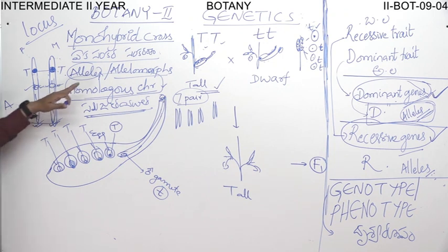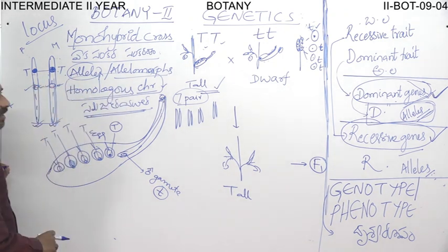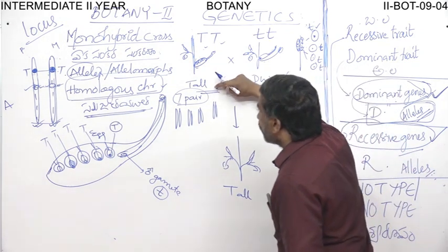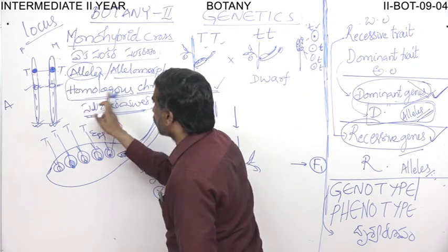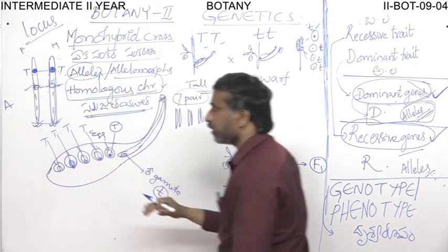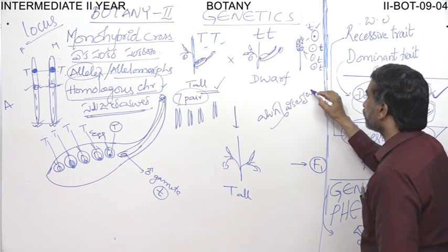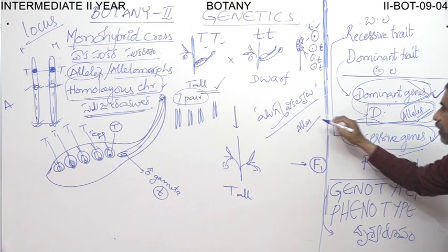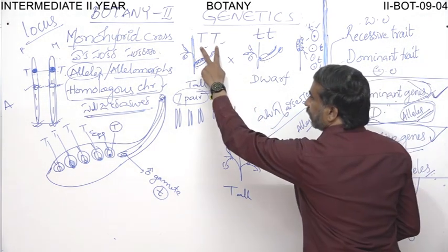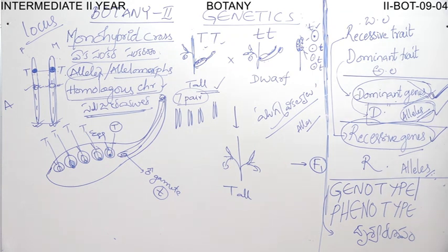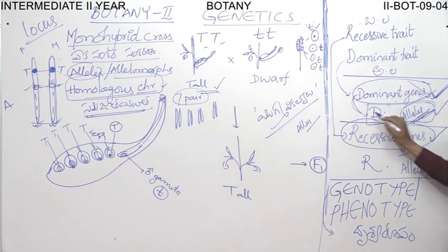Alleles are also known as allelomorphs. So here, these are the dominant alleles — we should call them dominant alleles, because these two genes code for a single character and are present on the same locus of homologous chromosomes. Hereafter, we use the word dominant alleles.